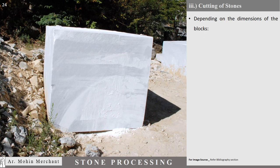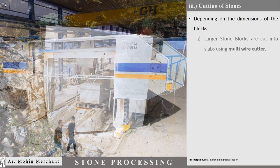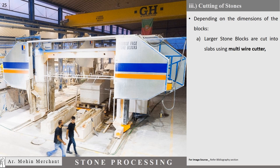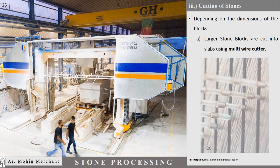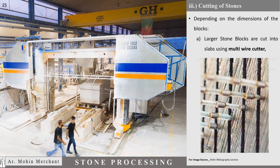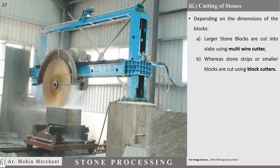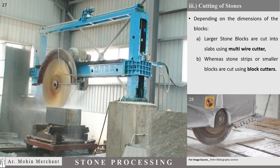Depending on the dimensions of the blocks, larger stone blocks are cut into slabs using a multi-wire cutter, whereas stone strips or smaller blocks are cut using block cutters. The aim is to minimize the wastage of the block.